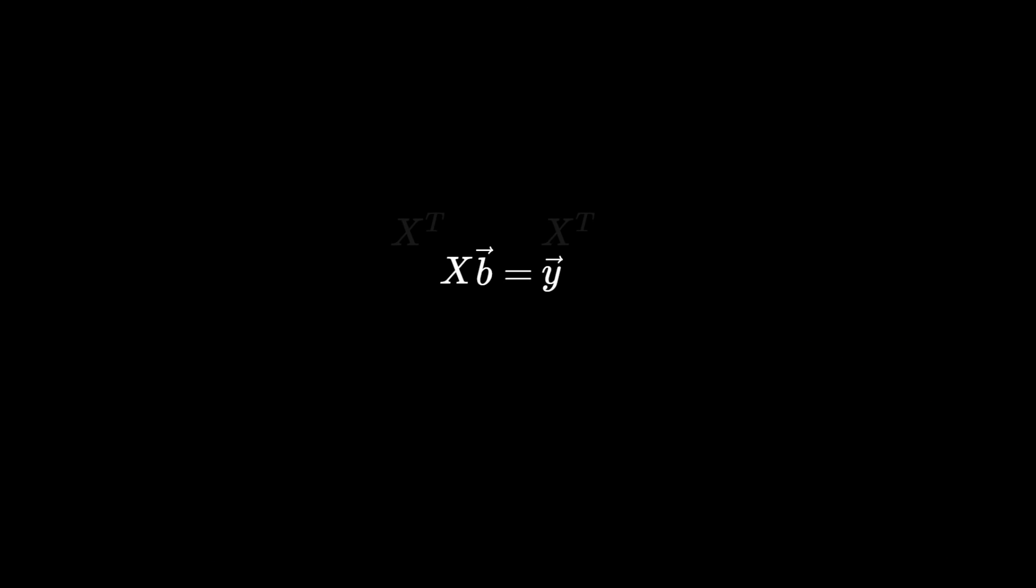Here's the entire process again, but in algebraic form. In the end, the vector b is given by X transpose X inverse times X transpose times Y. This is the formula for a coefficient vector.